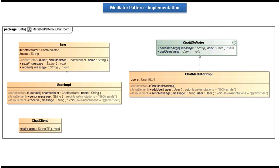This is the class diagram of the scenario we have just seen. On the top right you can see ChatMediator — it is an interface. It has two methods: send message and add user. These two methods are abstract methods and they will be implemented by the concrete class ChatMediatorImpl.